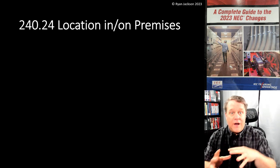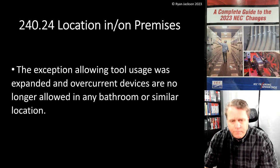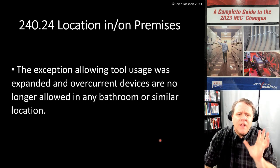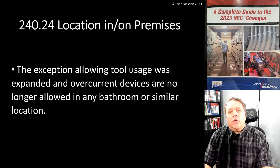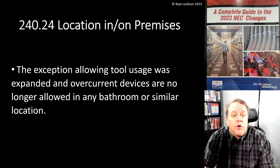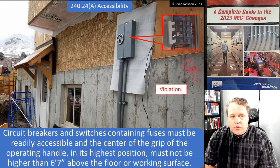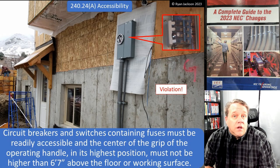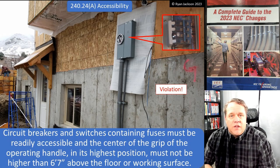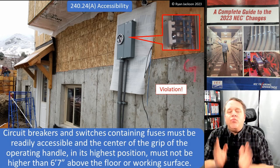So outside, inside, above six foot seven, down low — that's what 240.24 covers. The exception allowing tool usage was expanded, and overcurrent devices are no longer allowed in any bathroom or similar location. Under 240.24(A), accessibility: circuit breakers and switches that contain fuses must be readily accessible.